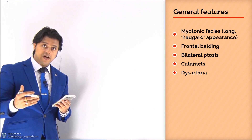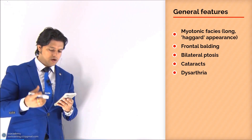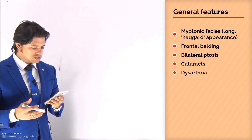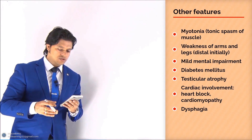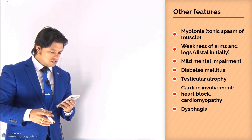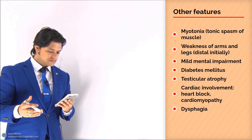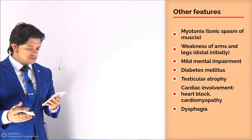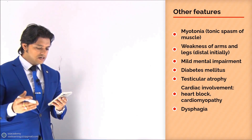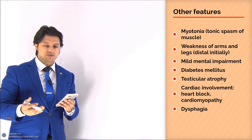The features of DM1 include general features of the myotonic facies: the long haggard appearance, frontal balding, bilateral ptosis, cataracts, and dysarthria. Other features of myotonia include tonic spasm of the muscles and weakness of the arms and legs, distal initially. Additional features include mild mental impairment, diabetes mellitus, testicular atrophy, and cardiac involvement — that is heart block and cardiomyopathy — and dysphagia.